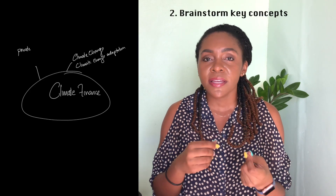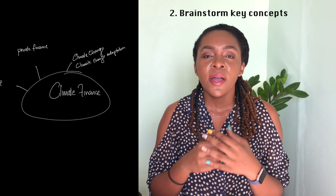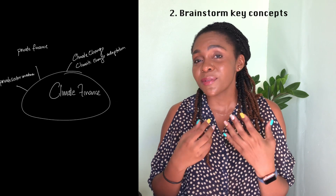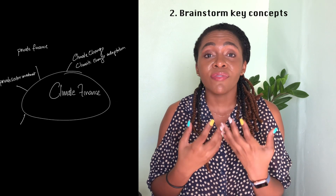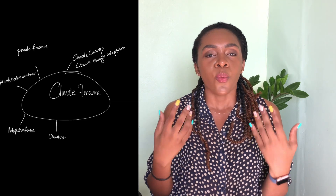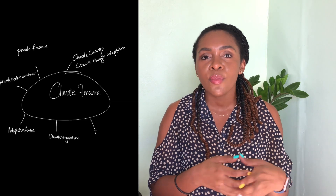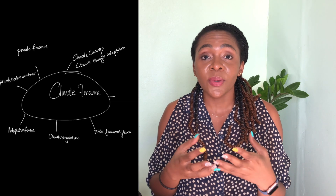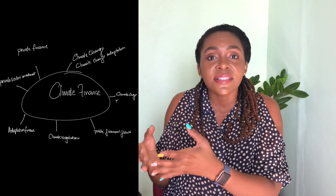Do a brainstorm — maybe a mind map — of the concepts and theories that are relevant to your work. Ask yourself: what do you know, what do you need to know, and what do others need to know in order to follow the research paper you're going to write? Once you've identified some of those concepts and theories, your next step is to start researching.